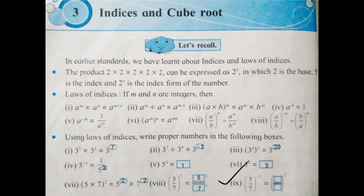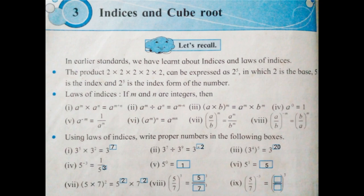Next: 5 upon 7 in bracket raised to minus 3. To make the index positive, according to the laws of indices, the formula is A upon B in bracket raised to minus M is equal to B upon A in bracket raised to M. So 5 upon 7 in bracket raised to minus 3 equals 7 upon 5 in bracket raised to 3. To make the index positive, you have to write the multiplicative inverse of 5 upon 7, and after writing the multiplicative inverse, the index will be positive, that is 7 upon 5 raised to 3.